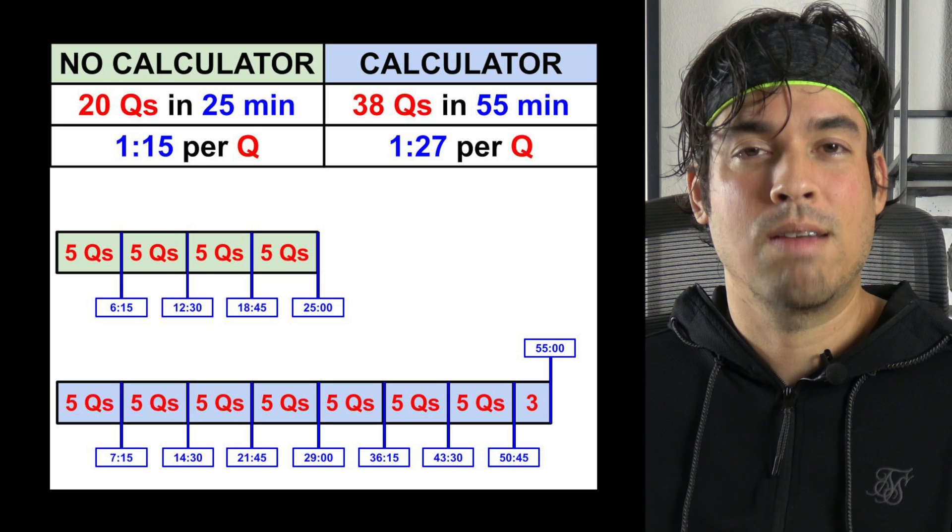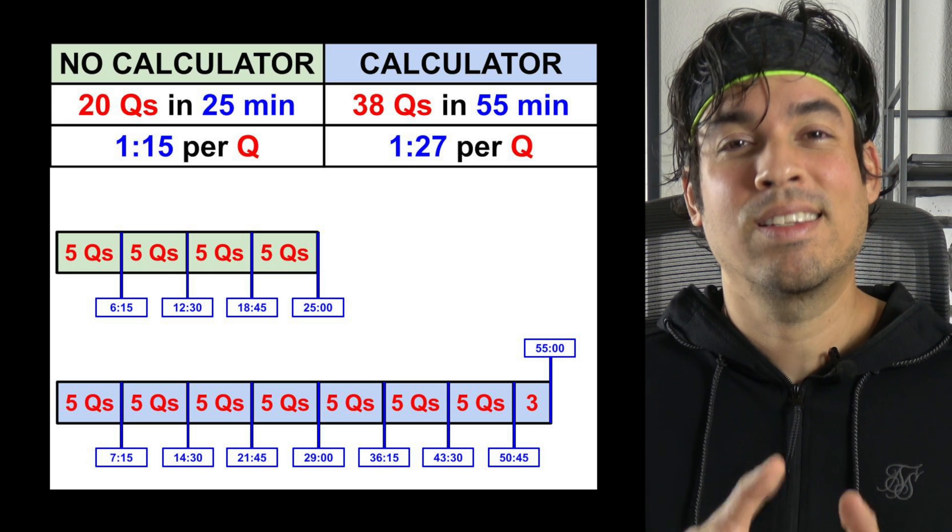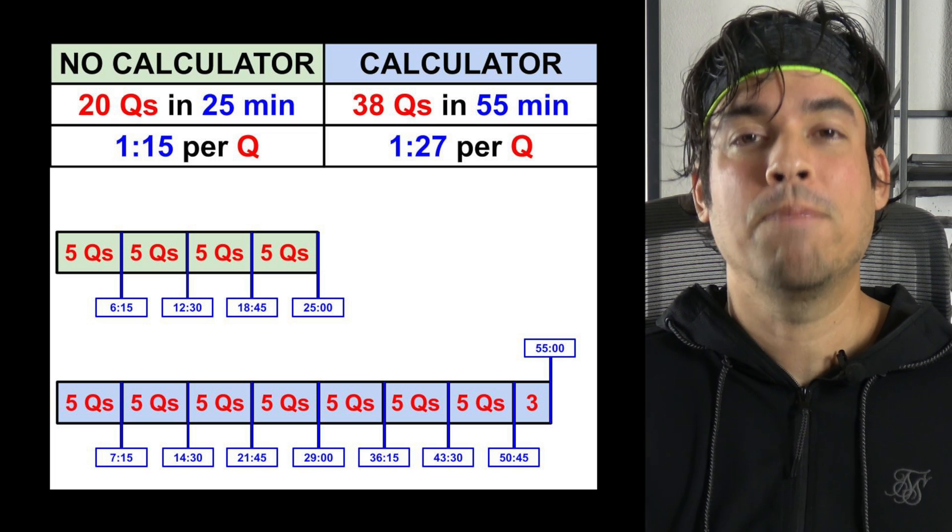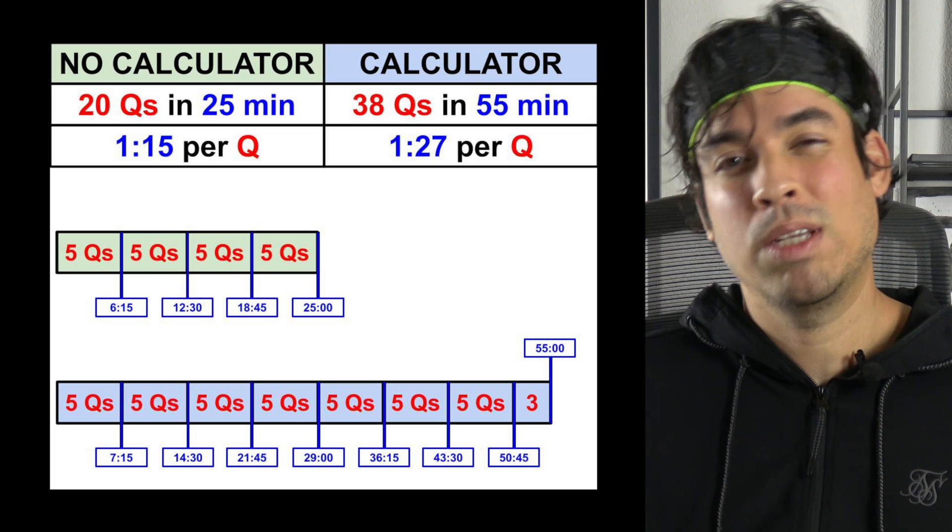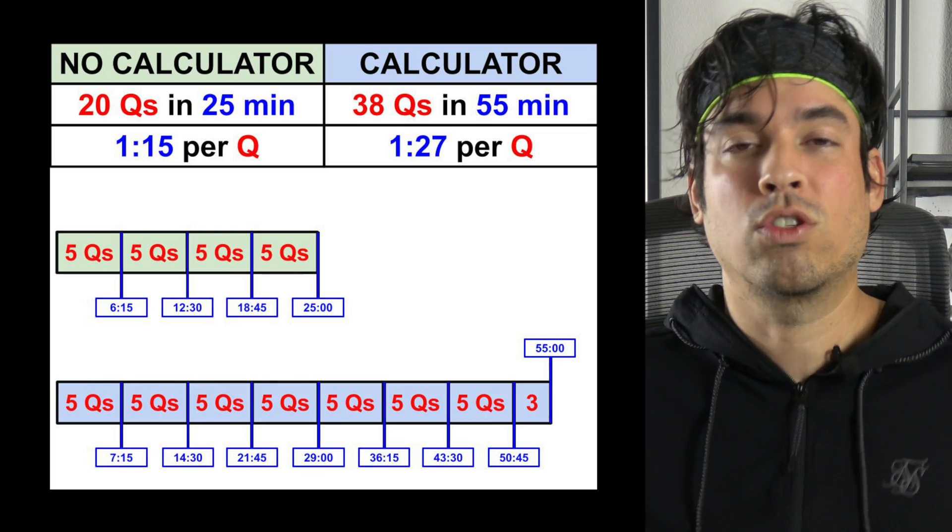This approach however doesn't necessarily make total sense because the difficulty per question is spread out, meaning the first 10 questions are generally going to be on the easier side, then the next 10 are going to be a little bit harder and so on and so forth.